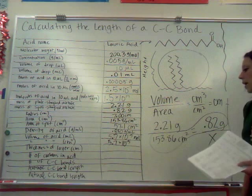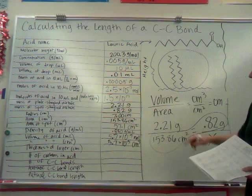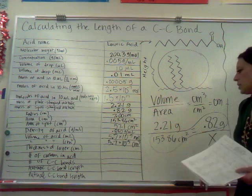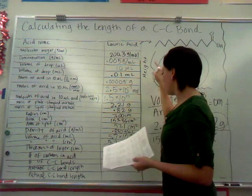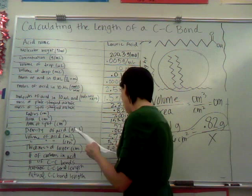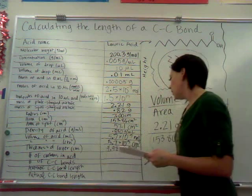Now we can calculate the thickness of the layer. We know the volume of that entire drop is 5.7 times 10 to the minus fifth centimeters cubed. We know the area is 57.1 centimeters squared, volume divided by area. We now know the height of that monolayer, which is, in my calculation, 9.98 times 10 to the minus seventh centimeters.